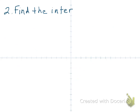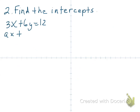In number 2 we've got to find the intercepts. Notice that this equation is in what we call the standard form of a linear equation — that's the ax plus by equals c form. Here a is 3, b is 6, and c is 12. This standard form is often the form we have when we find the intercepts.